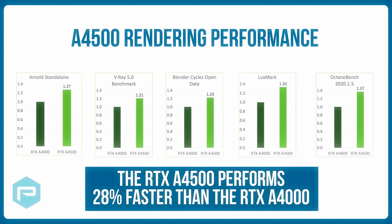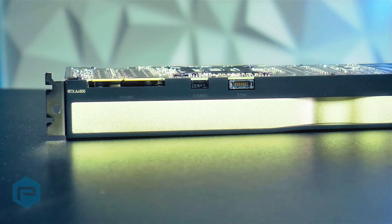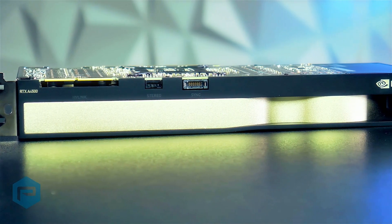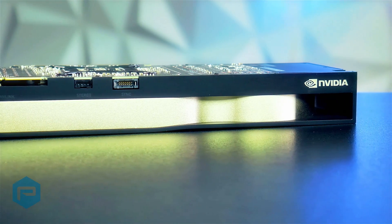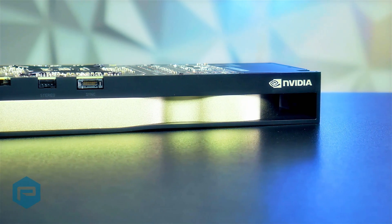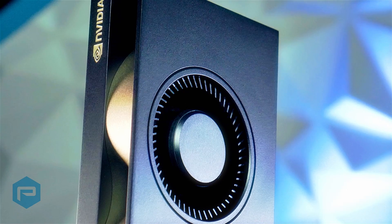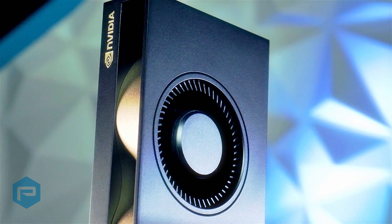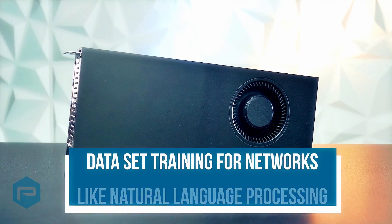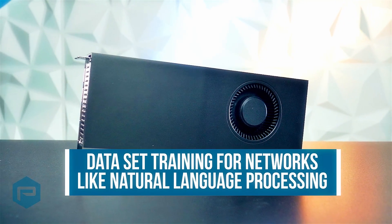On average, the RTX 8400 performs 28% faster than the RTX 8400. The same holds true for AI-centric workflows utilizing the RTX 8400. The additional Tensor cores enable the RTX 8400 to provide better AI training and inferencing performance than the RTX 8400. The larger GPU memory the RTX 8400 provides enables higher levels of training performance for larger dataset training for networks like natural language processing.